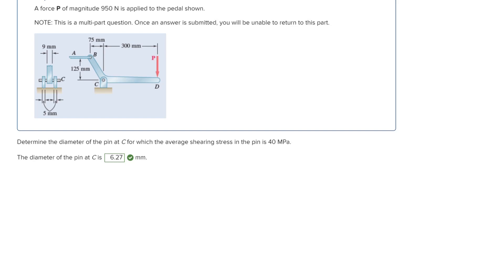For this problem we're trying to find the diameter of the pin at point C. As you can see, we have two little links holding it in place. When we have two links holding a pin in place like this, that is a case of double shear. When we have double shear, we know that the average stress is equal to P over 2A, since there are two links.